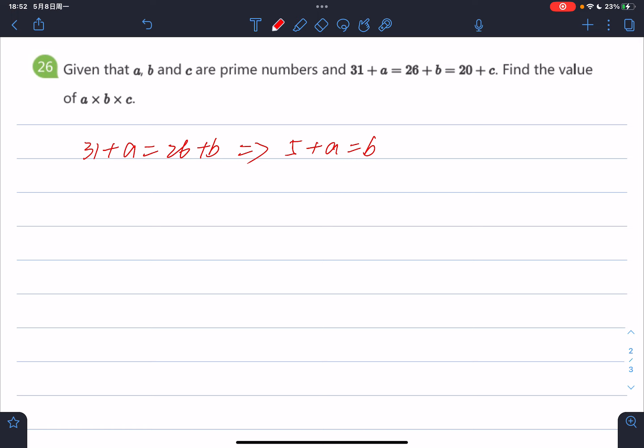And it tells us a and b are both prime numbers. So first of all, we can make sure that b is more than 5.